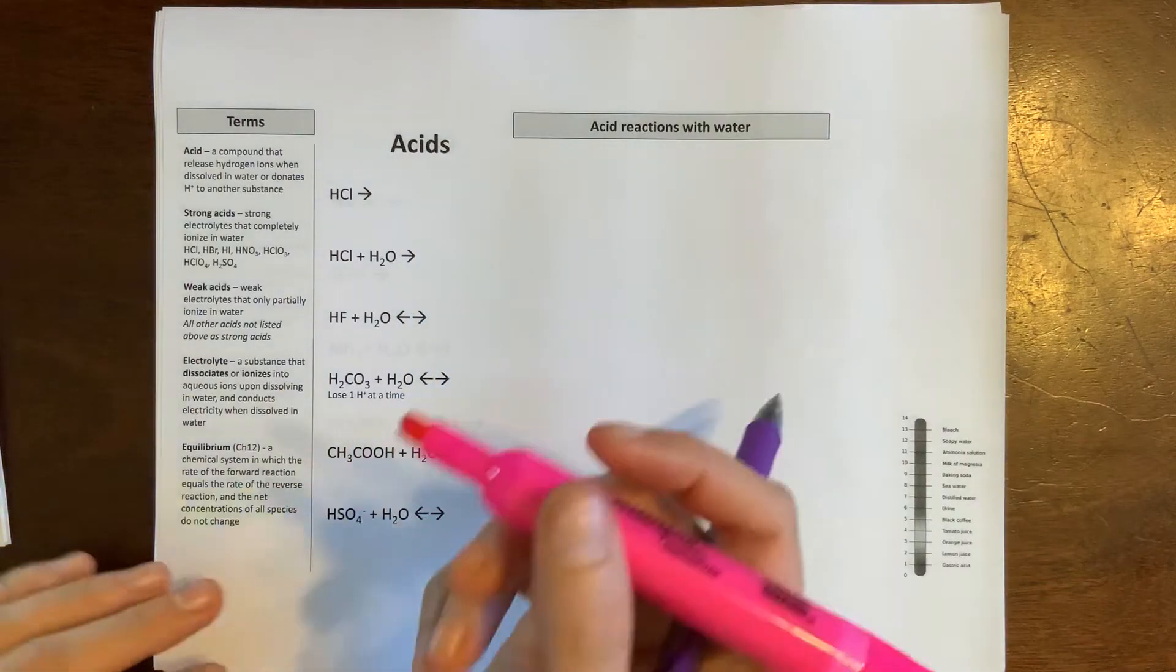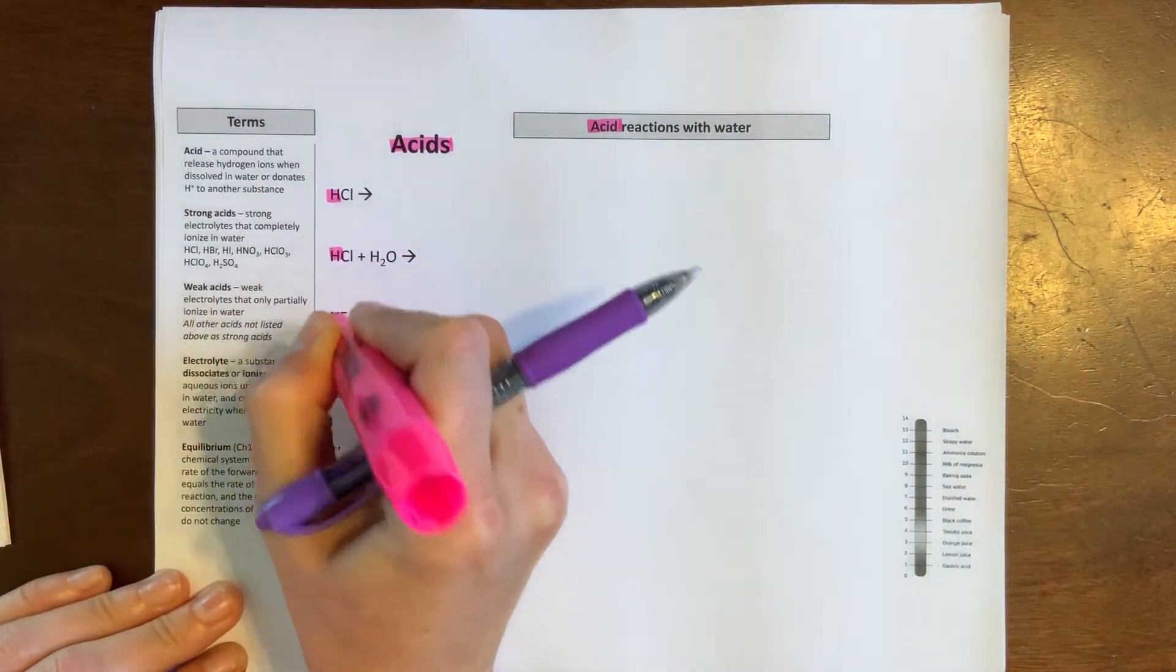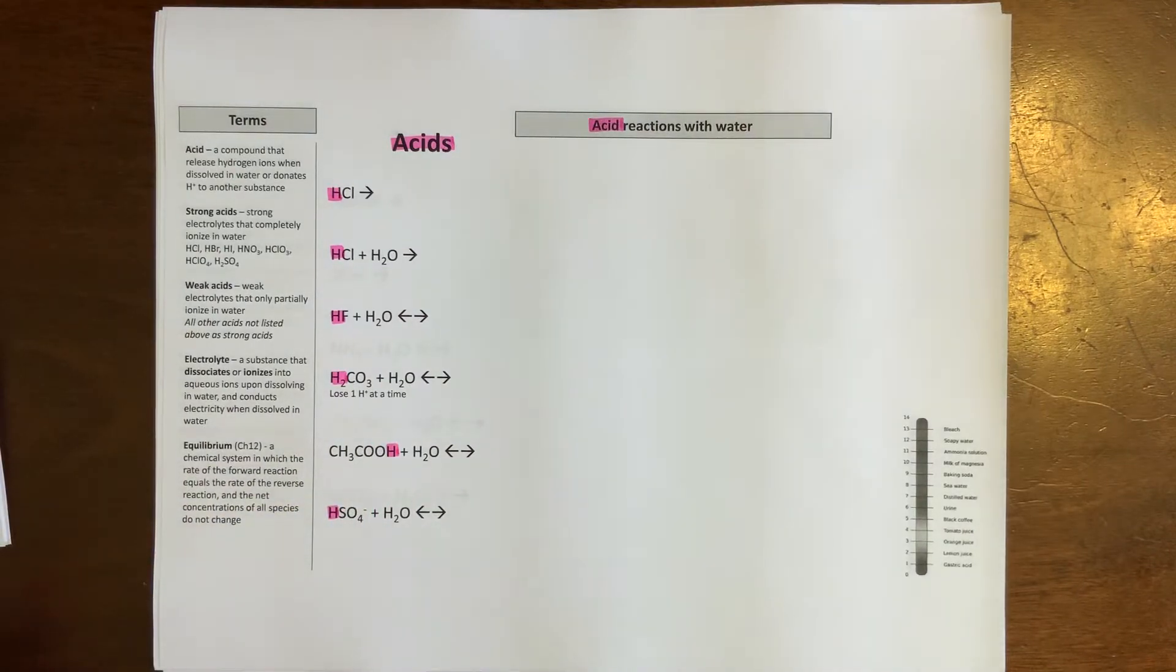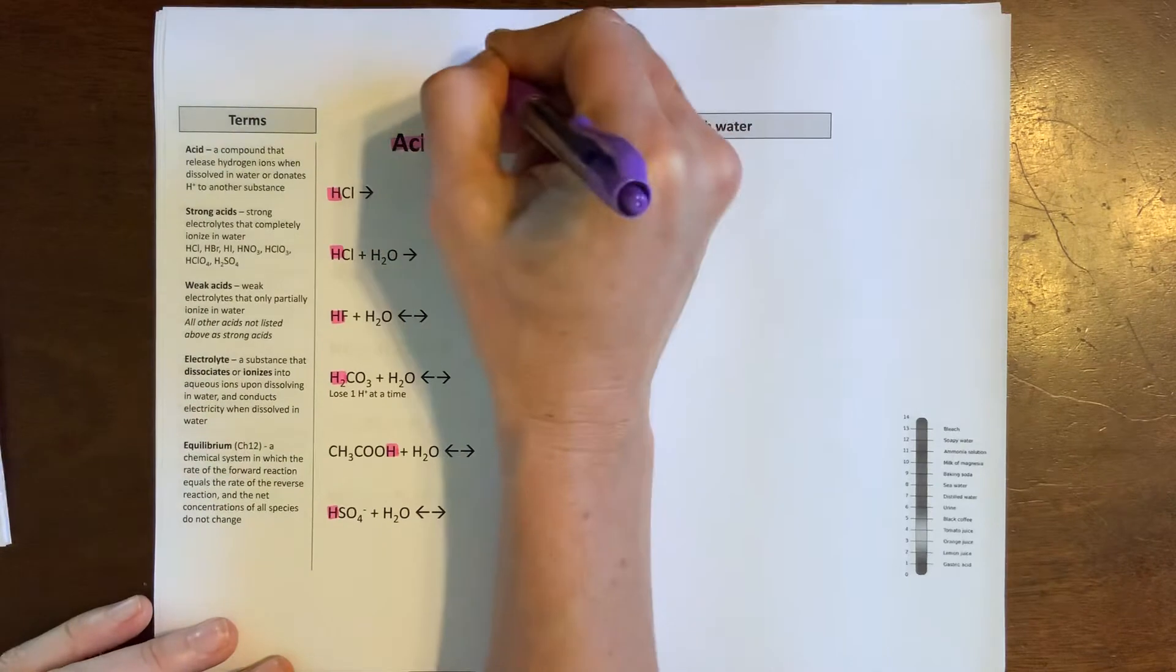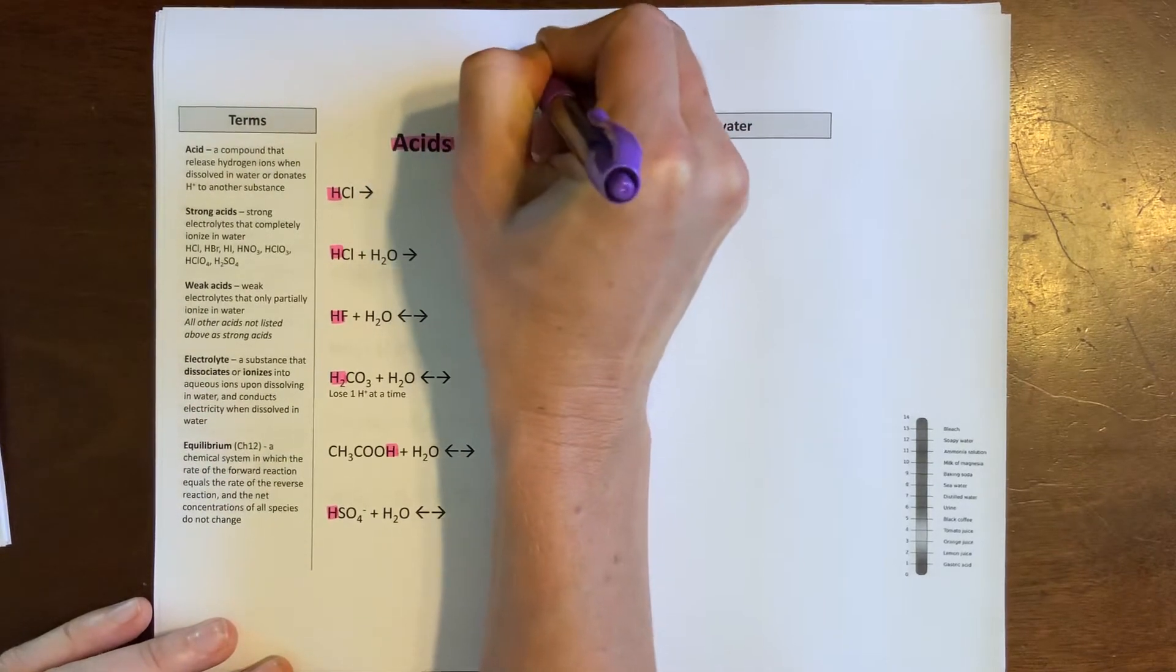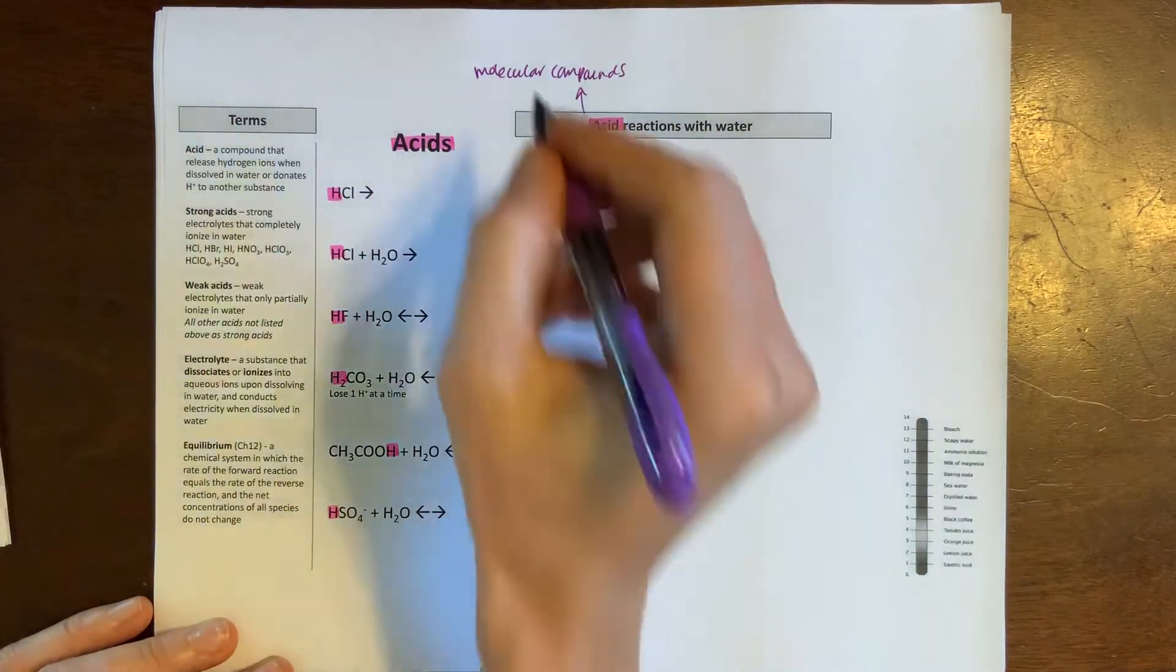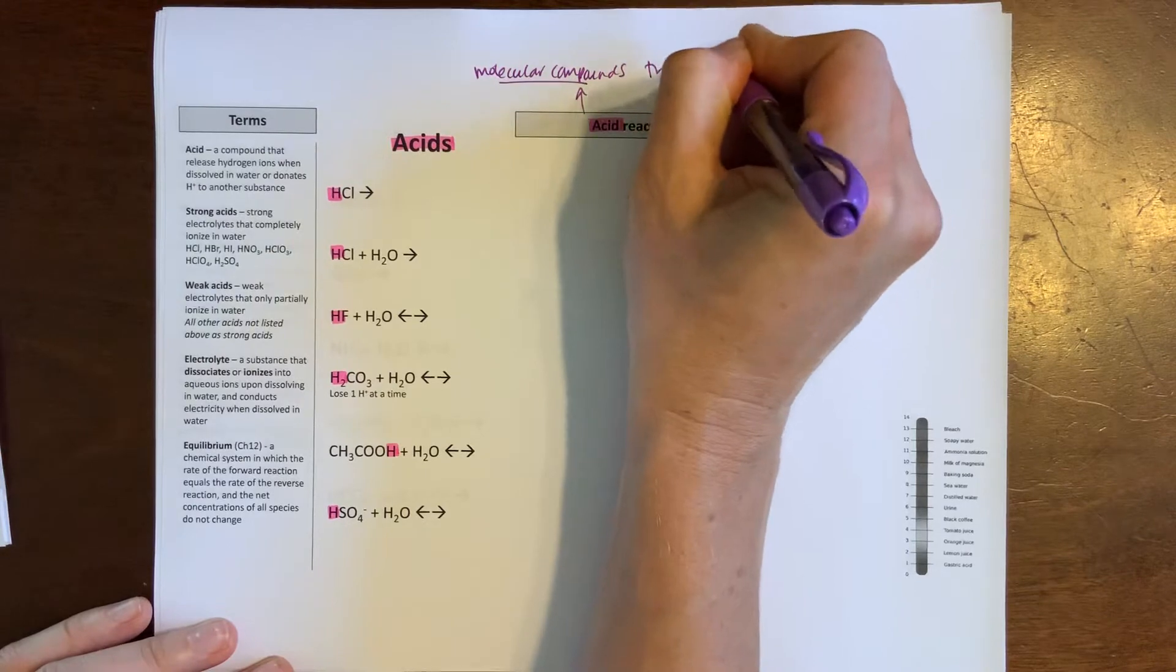We're going to continue taking a look at acids. You'll notice that on each of these compounds there are some protons ready to be given away, and that's what makes them all acids. Acids are molecular compounds, and all of them are going to encounter water here. So they're molecular compounds that ionize.